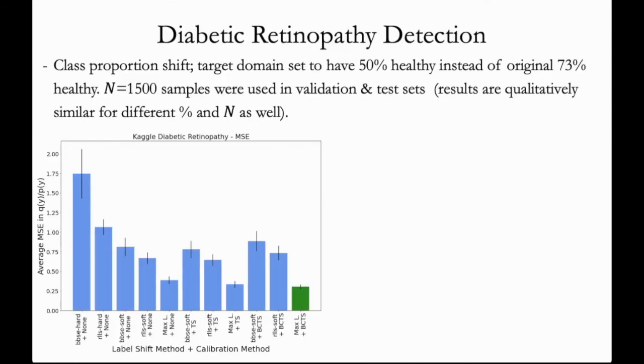And we also applied our method to the Kaggle diabetic retinopathy dataset, where we adapted a predictor that distinguishes healthy eye images from diseased images. We simulated label shift by reducing the proportion of healthy eyes to 50% down from the original 73%. Once again, we found that max likelihood with BCTS achieves the best results.